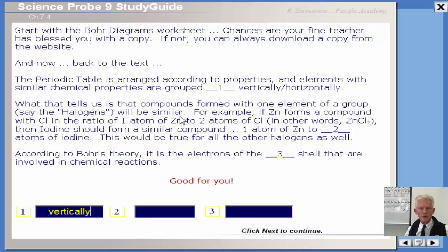What that tells us is the compounds formed with one element of a group, say the halogens, will be similar. So important. For example, if zinc forms a compound with chlorine in the ratio of one atom of zinc to two atoms of chlorine, in other words, the formula ZnCl2, notice the subscript down below, then iodine, who is also in the same family as chlorine, the halogens, should form a very similar compound. One atom of zinc to how many atoms of iodine? Because chlorine forms two with zinc, then because iodine is in the same family as chlorine, it should be two as well. Let's check it out. I'm amazing.